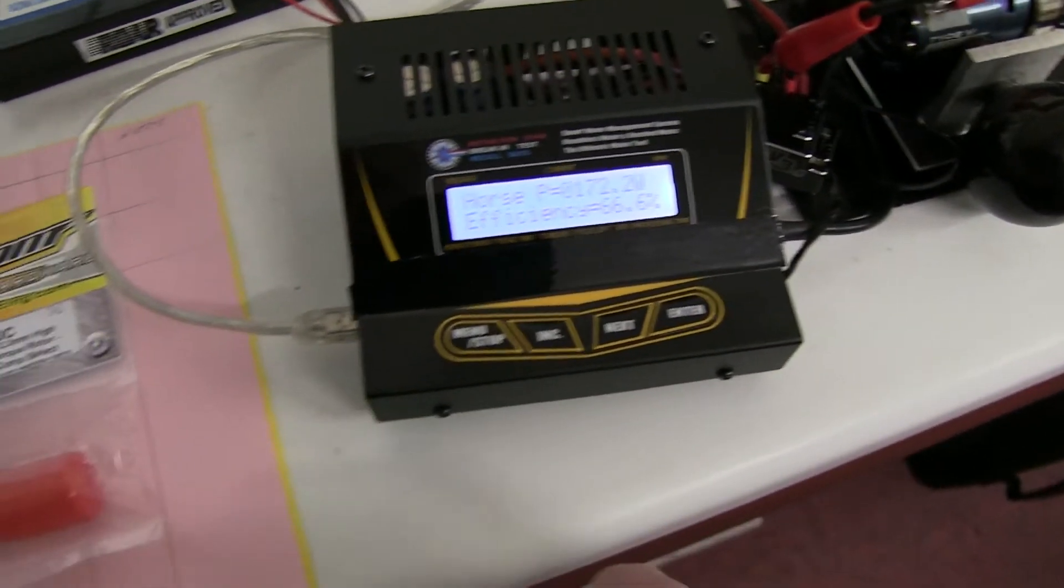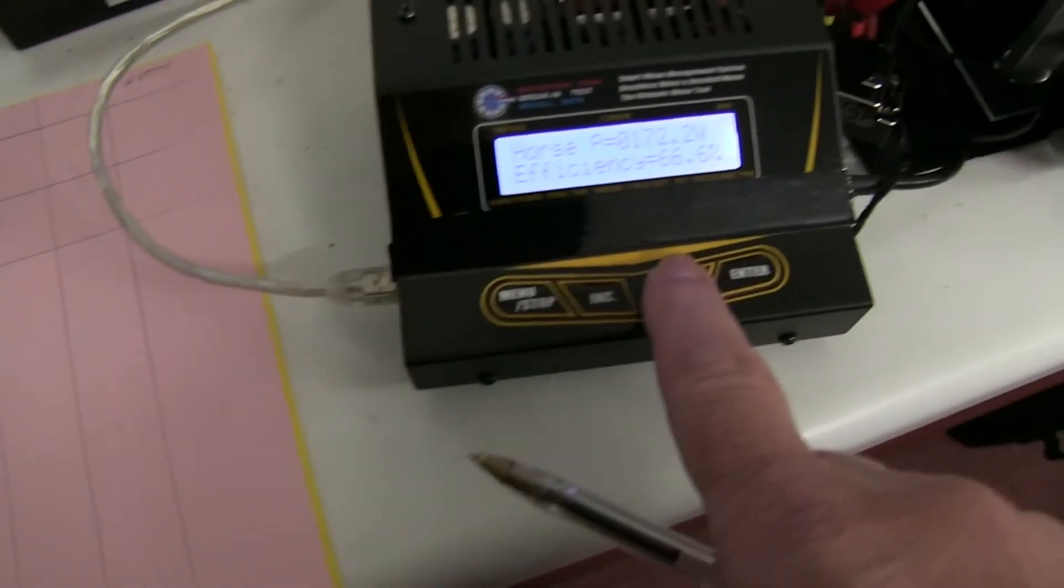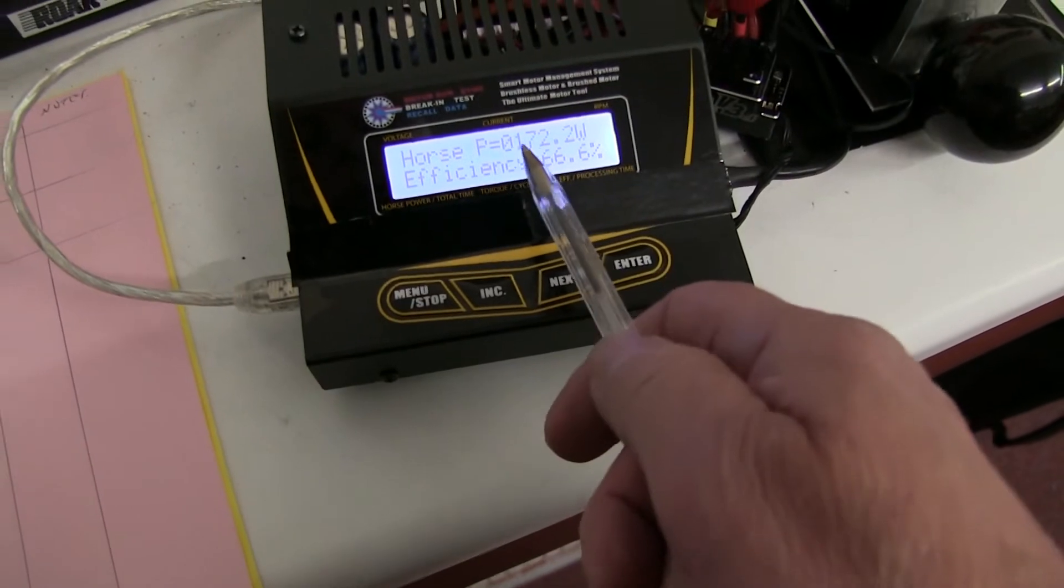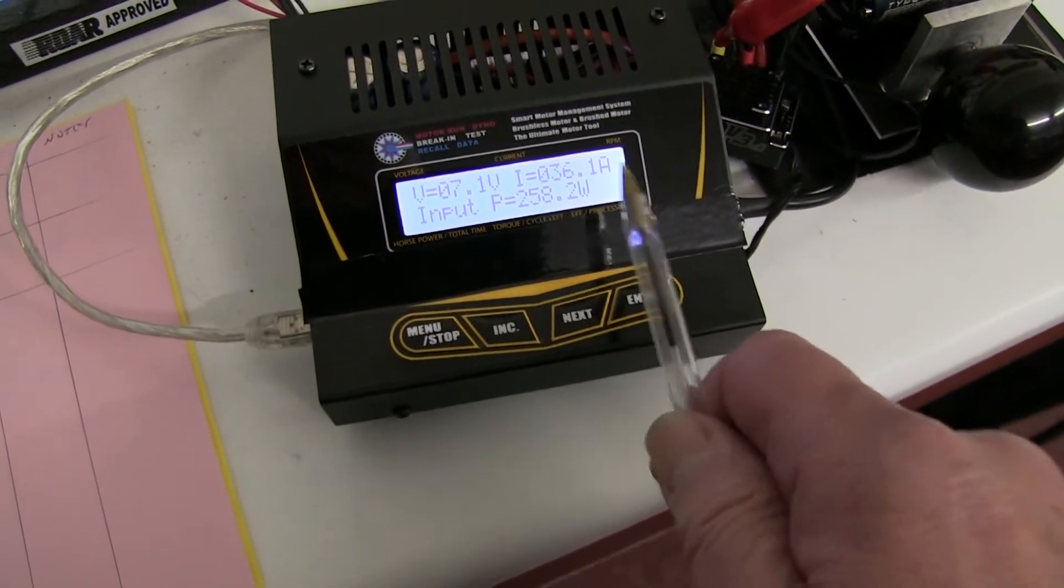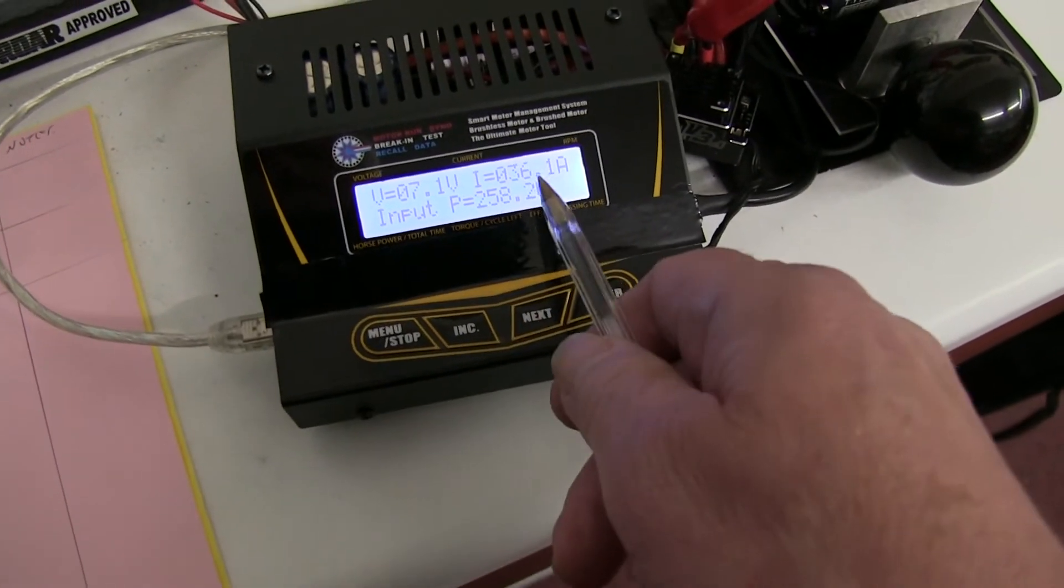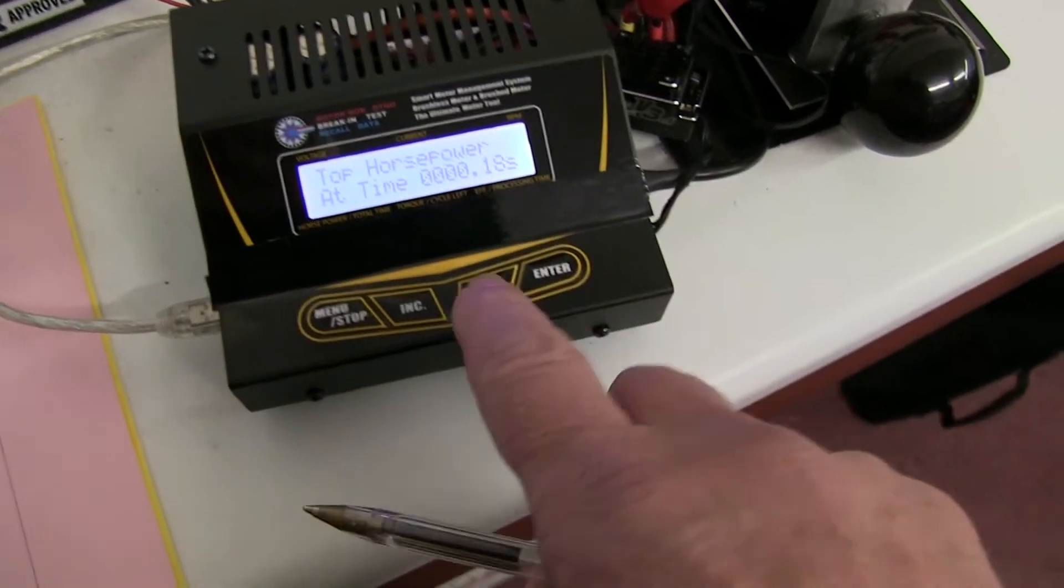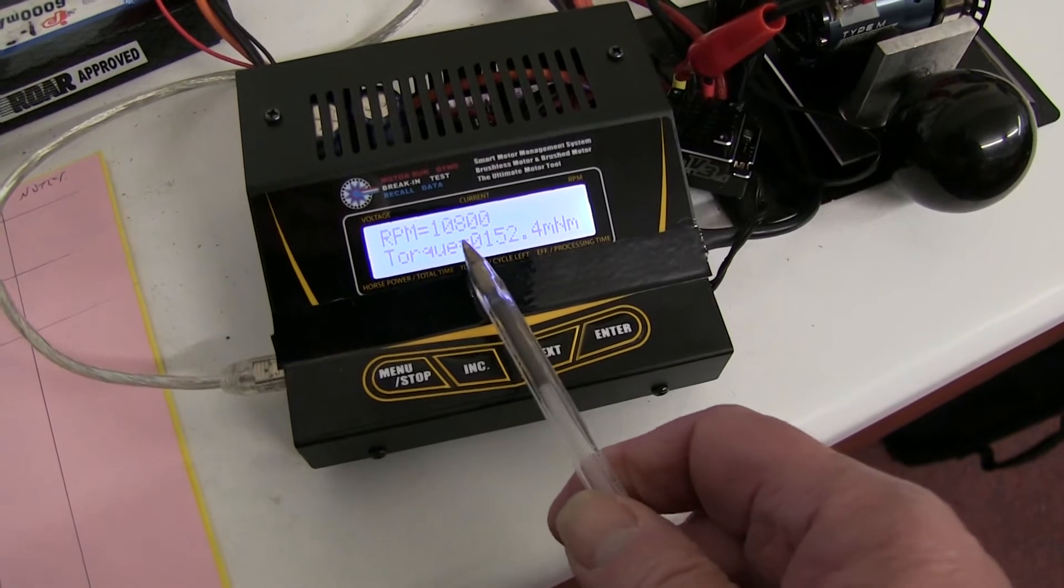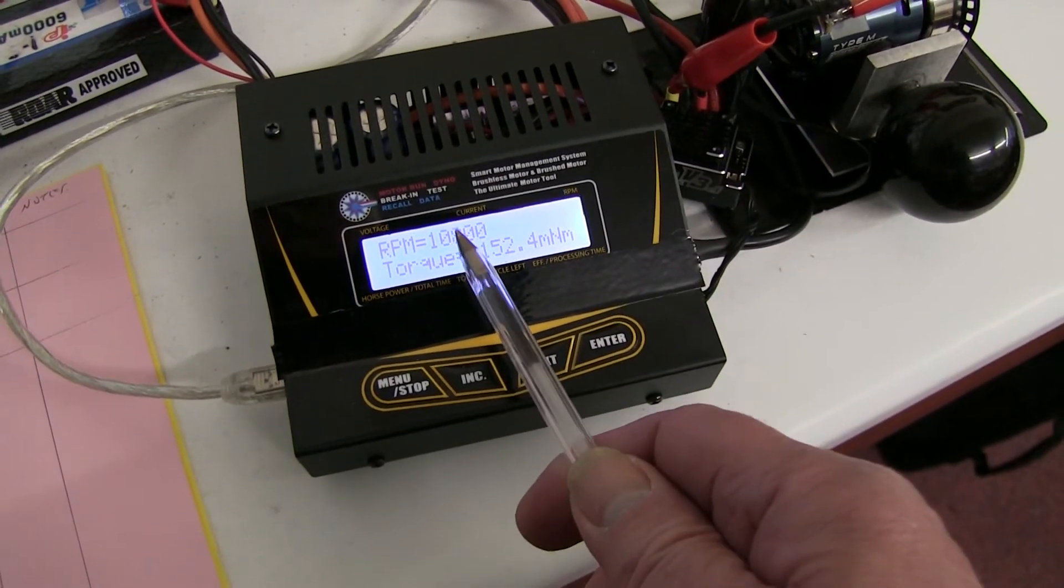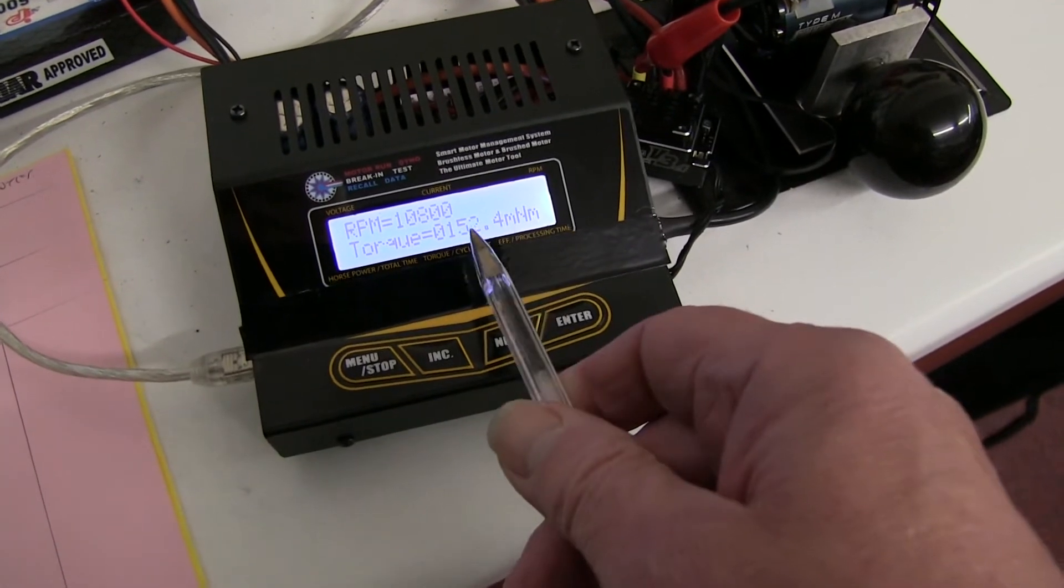So I'll make a note on this chart of the results. And then I'll note down some of these figures, the horsepower and the amps drawn at the maximum horsepower. Some of these figures are not totally accurate but they're quite useful. The revs point was 10,800 and the torque was that.